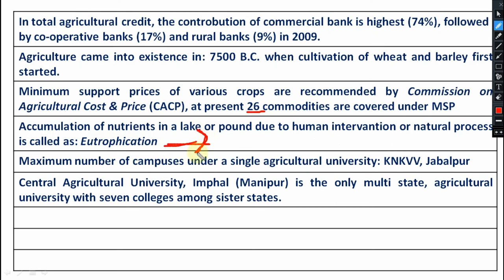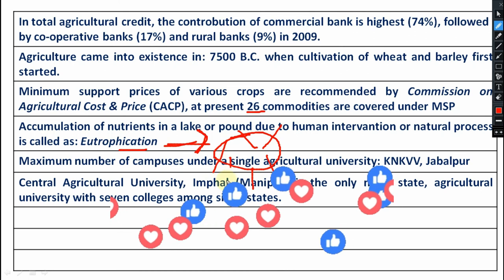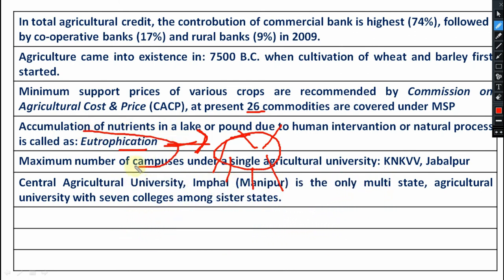What is eutrophication? It is the accumulation of nutrients in a lake or pond due to human intervention or natural processes. In aquatic bodies where accumulation of nutrients occurs due to human intervention, that is known as eutrophication.